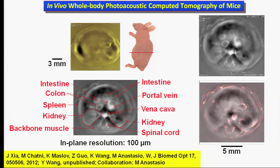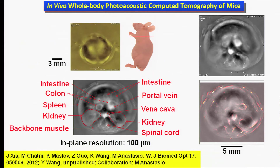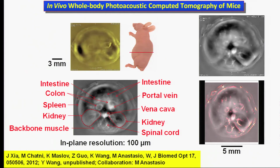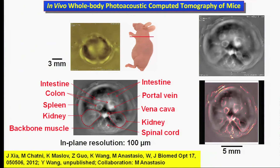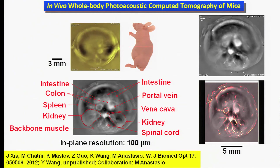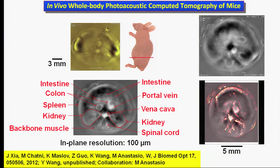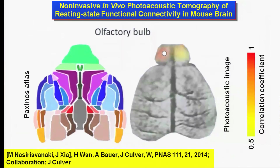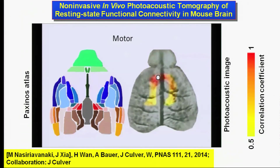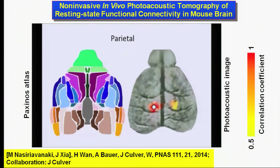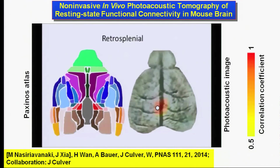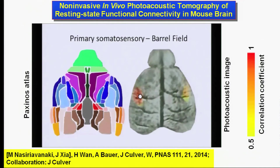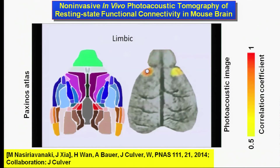The whole body of a small animal can be imaged in 3D, in vivo, using endogenous contrast, allowing repeated safe imaging for drug discovery or similar longitudinal studies. Complementary to functional MRI, photoacoustic tomography can image resting-state functional connectivity between the two hemispheres of the animal brain at high resolution.